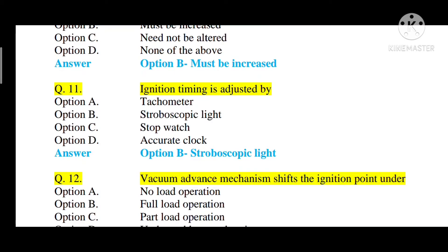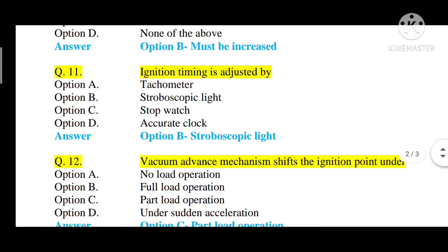Question number eleven: ignition timing is adjusted by — option A: tachometer, option B: stroboscopic light, option C: stopwatch, option D: accurate clock. The correct answer is option B — stroboscopic light.